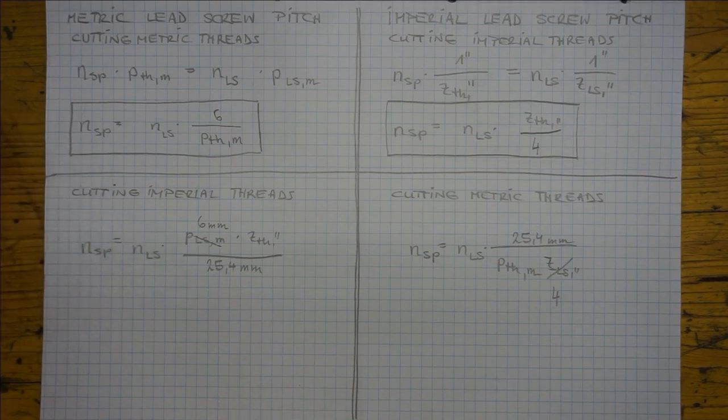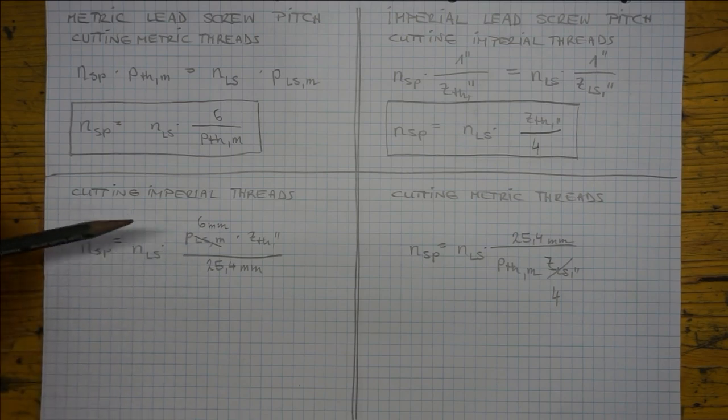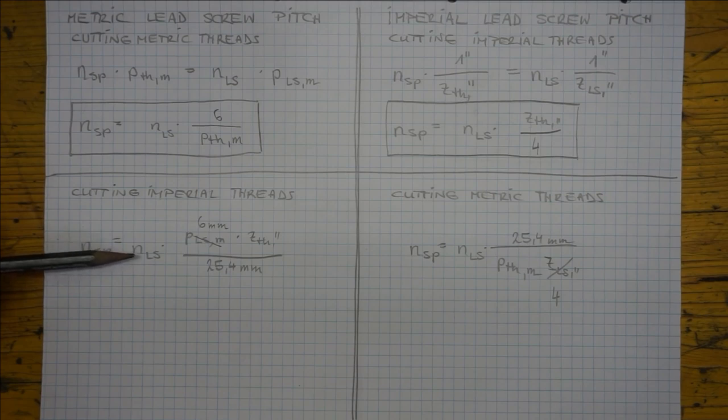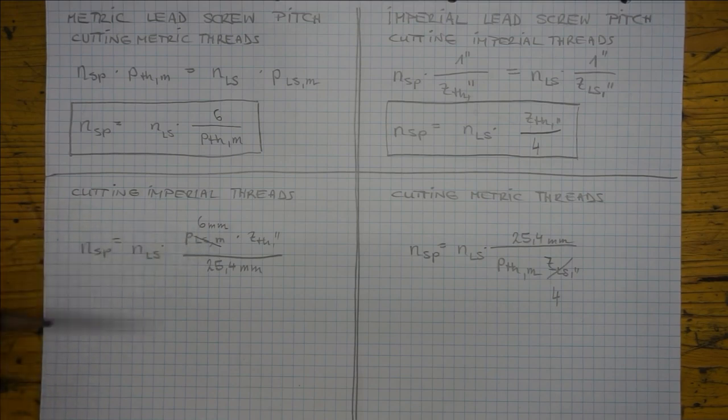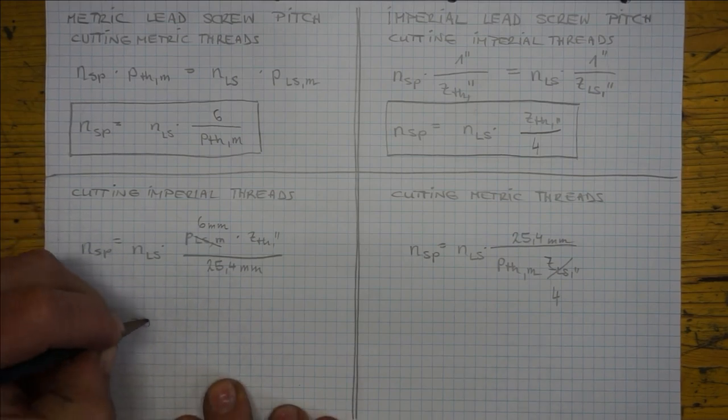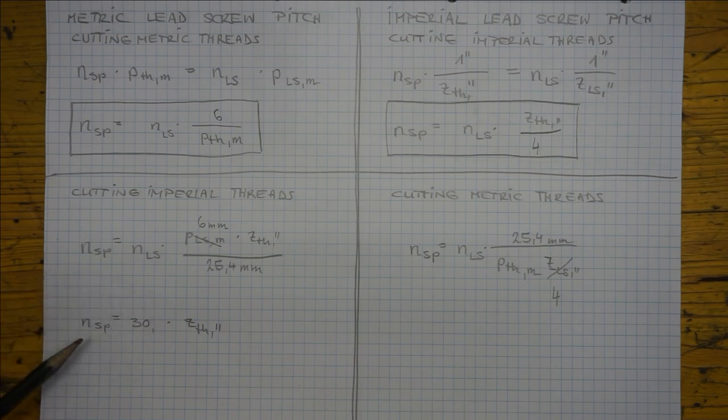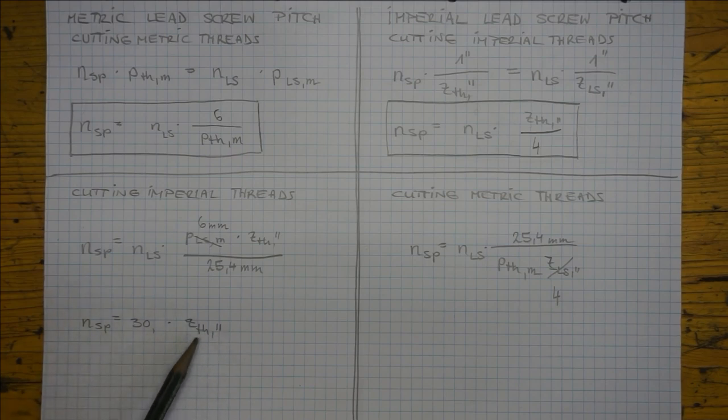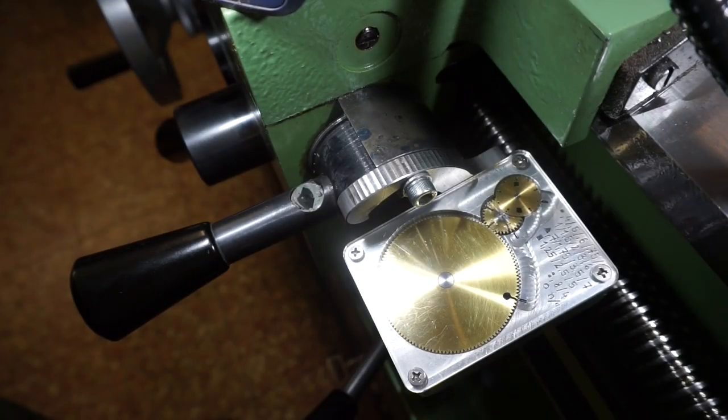But now it becomes clear that finding integer number combinations for NSP and NLS which satisfy these equations is not so easy anymore. In both cases we must get rid of the 25.4. In the left case this is accomplished if NLS is for example 254. Or if we use the lower prime number 127. Then this cancels out to number 5. And if we simplify the equation we get... So we see we get an integer spindle revolution number for every standardized imperial thread pitch ZTH. Easy peasy. But this is only true if we let 127 lead screw leads pass. That is NLS equals 127.